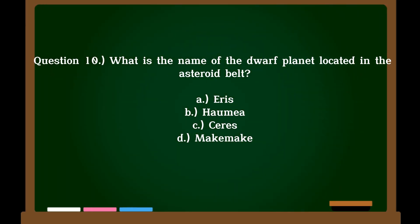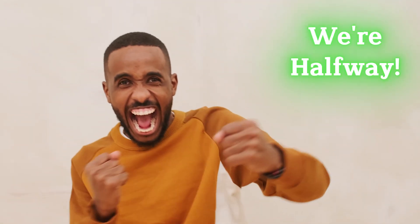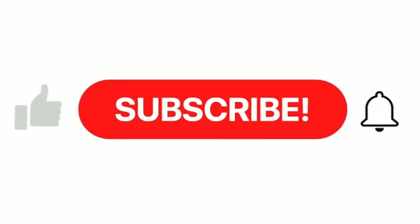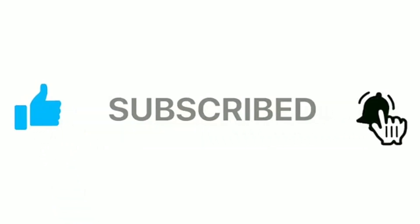Question 10. What is the name of the dwarf planet located in the asteroid belt? A. Eris, B. Haumea, C. Ceres, D. Makemake. Correct answer: C. Ceres. We're halfway through our grade 6 science quiz. If you're enjoying this video, please consider hitting that subscribe button to show your support.